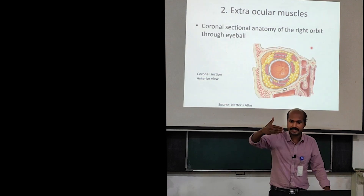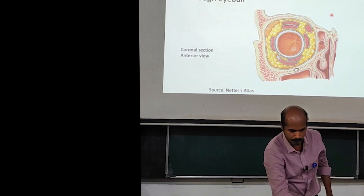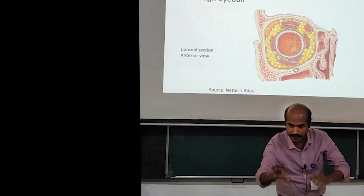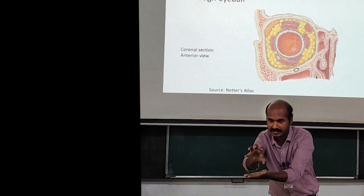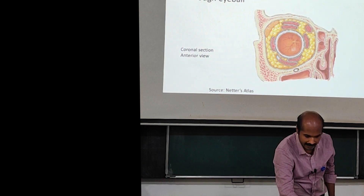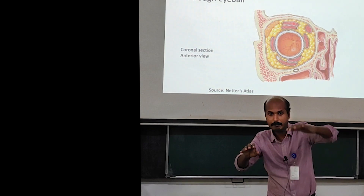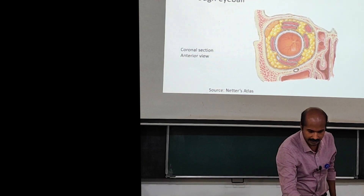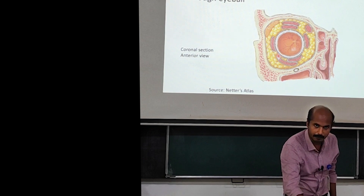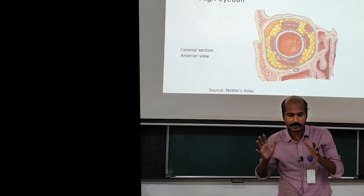In the more anterior coronal section you can see the eyeball. Above the eyeball is the superior rectus, with the medial rectus, lateral rectus, and inferior rectus on their respective sides — the four recti on four sides of the eyeball. Above the superior rectus you can see the levator palpebrae superioris, above the medial rectus is the superior oblique, and the inferior oblique takes origin from the floor and attaches to the eyeball. This gives a clear picture of the orientation of these muscles.